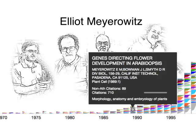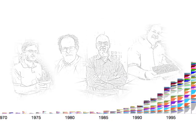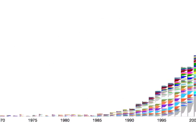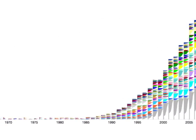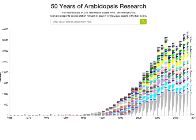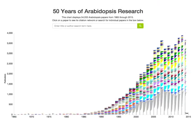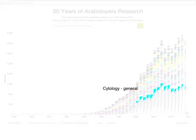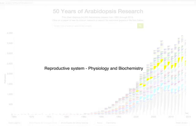...Arabidopsis research has exploded with more than 54,000 publications covering 406 different fields such as enzymes, cytology, the reproductive system of plants, and others.